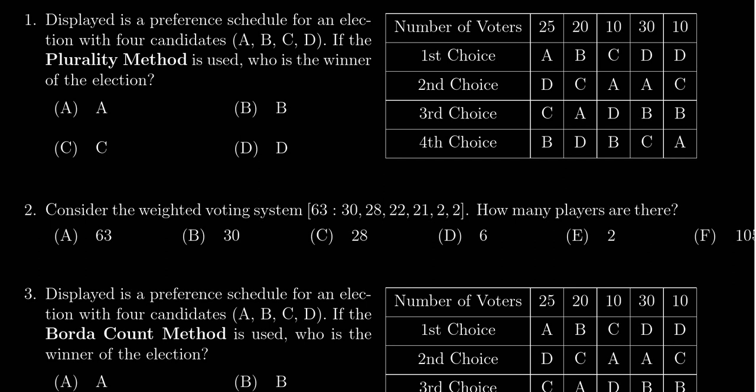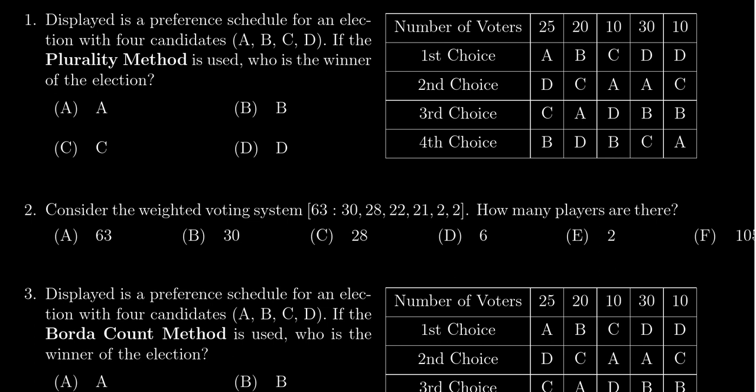In this video we provide the solution to question number one for practice exam number three for math 1030. We are given the preference schedule for an election of four candidates A, B, C, D, and we're asked to determine who's the winner of the election using the plurality method.